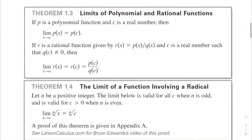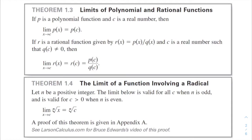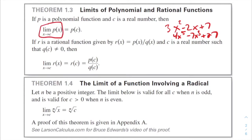Theorem 1.3 covers limits of polynomial and rational functions. If p is a polynomial function — like 3x² − 2x + 7 — and c is a real number, then the limit as x approaches c of p(x) equals p(c). We simply plug in c. If r(x) = p(x)/q(x) is a rational function and q(c) ≠ 0, then the limit as x approaches c of r(x) equals r(c) = p(c)/q(c).